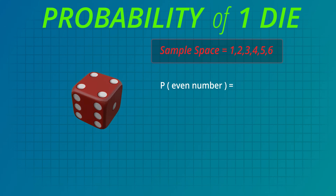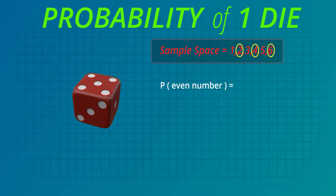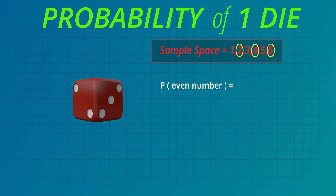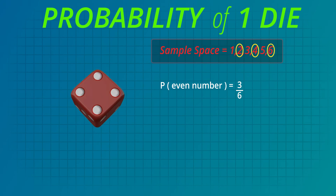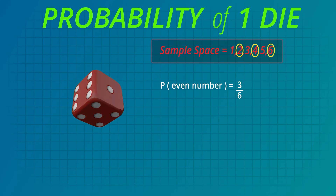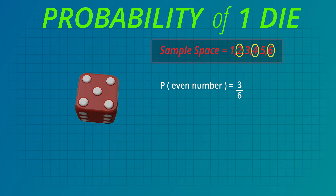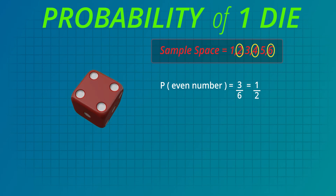The chance that the die will land on the side marked two is also one sixth, and so on. What is the probability that the die will show an even number? Even numbers are 2, 4, and 6 on a die, so there are three possible outcomes out of the six sides. That's 3 out of 6. We can divide the top and bottom numbers of the fraction to simplify this to 1 out of 2, or one half.